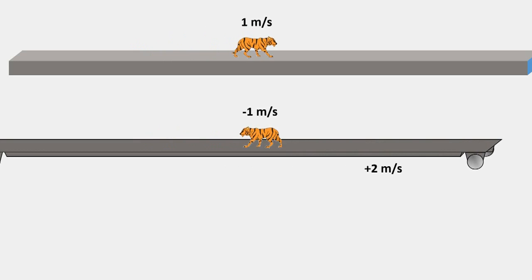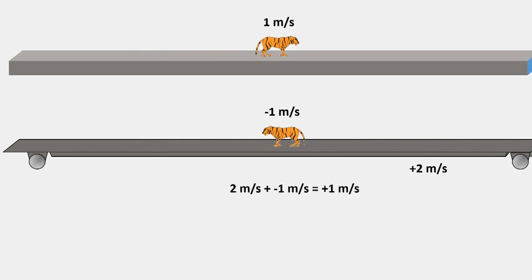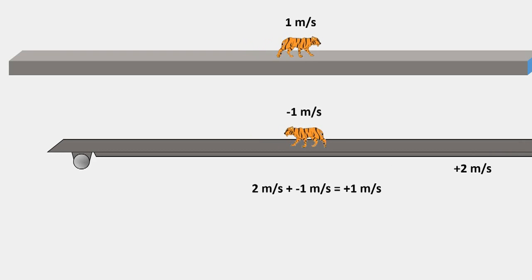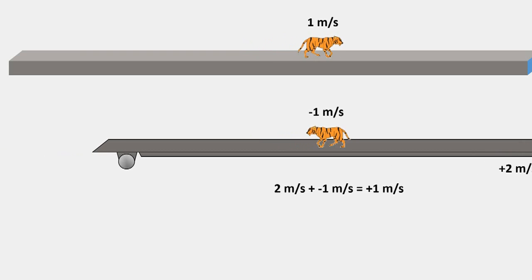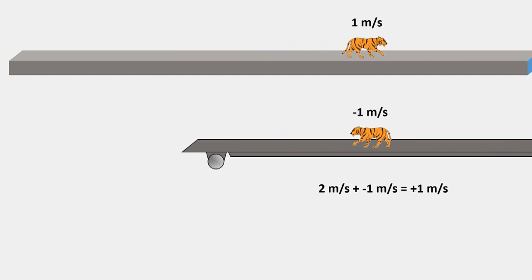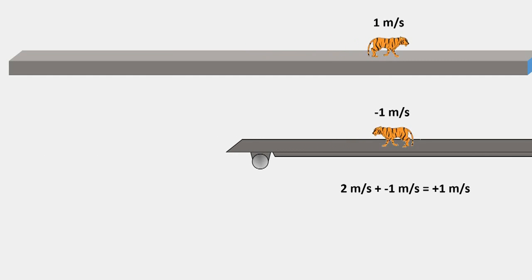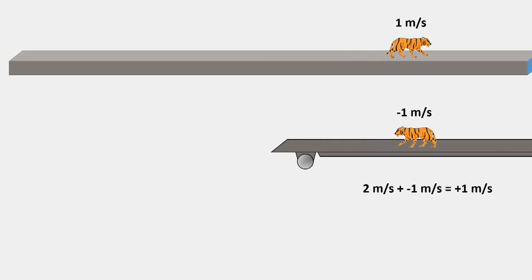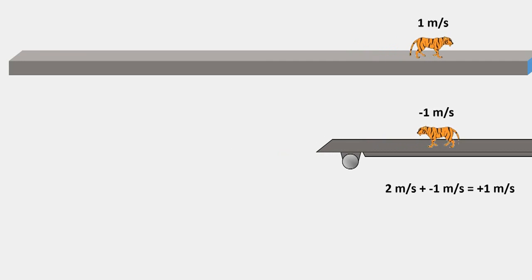then its velocity relative to the Earth is two meters per second plus negative one meter per second, which is positive one meter per second, or one meter per second towards the right. It's fairly clear that the two tigers are traveling at the same velocity relative to the Earth.